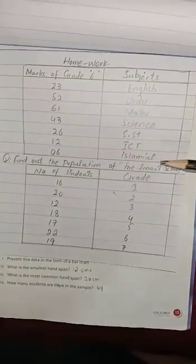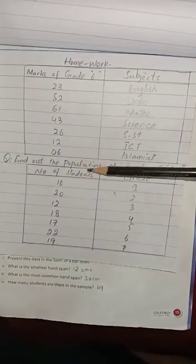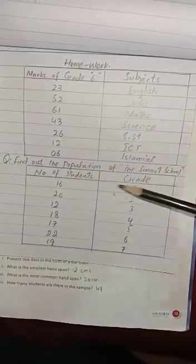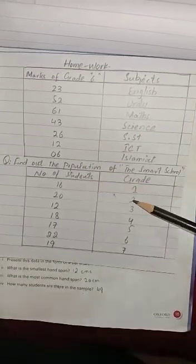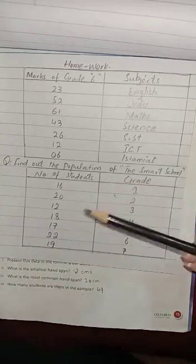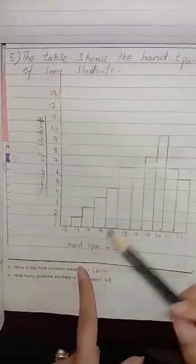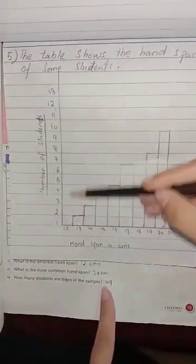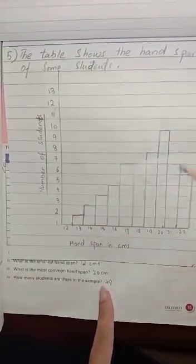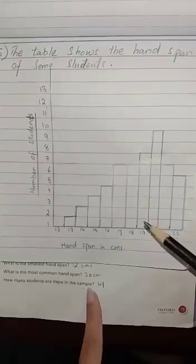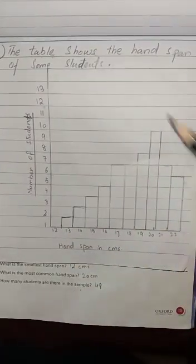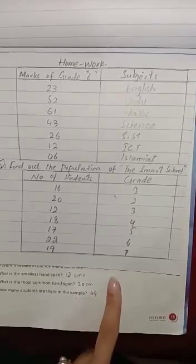Question number two is also unseen data for you: find out the population of the Smart School. Here are two columns — grade and number of students. Grade 1 has 16 students, Grade 2 has 20 students, Grade 3 has 12 students. You are supposed to draw the bar chart with number of students on one axis and grades on the other. This is super easy — you are supposed to solve this for your homework. Thank you, Al-Hafiz.